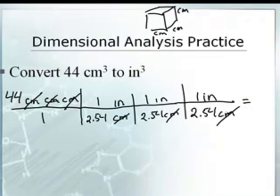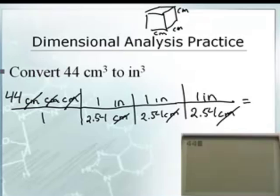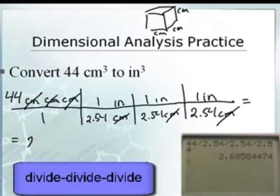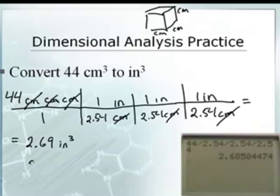So now I get inch, inch, inch — which is an inch cubed. So now I'm going to take 44 divided by 2.54 divided by 2.54 divided by 2.54 equals 2.69. My calculator says 2.68504474. But we only want two sig figs, so we'll say 2.7 inches cubed.